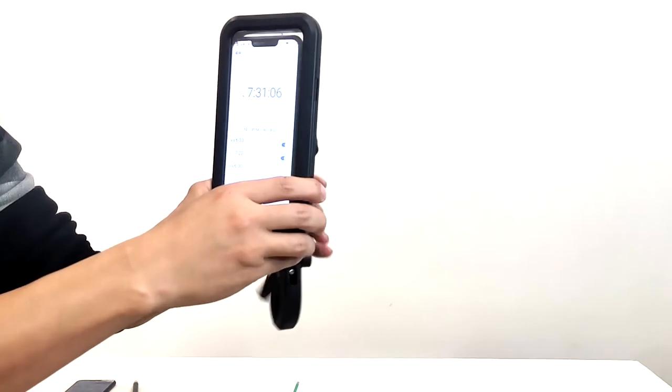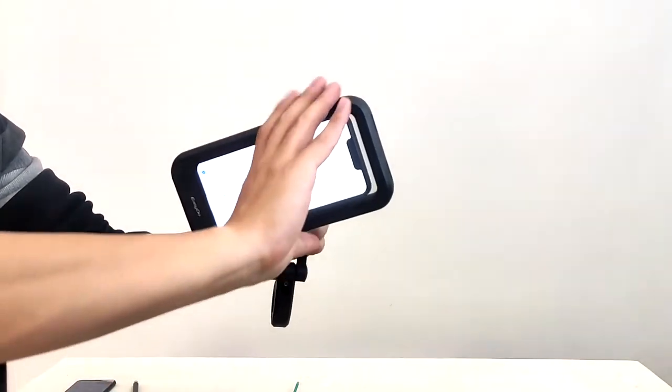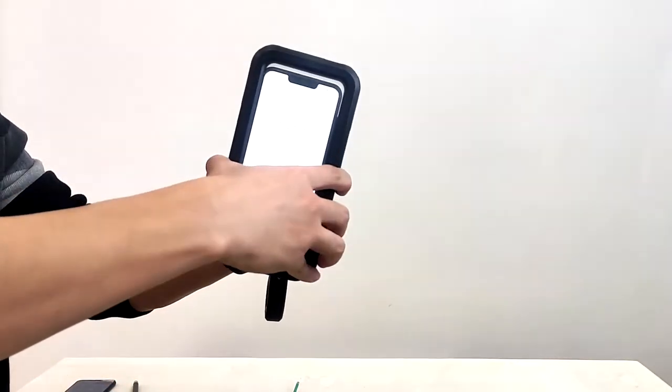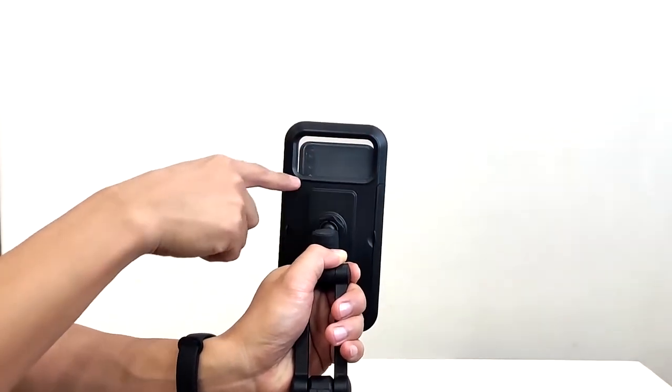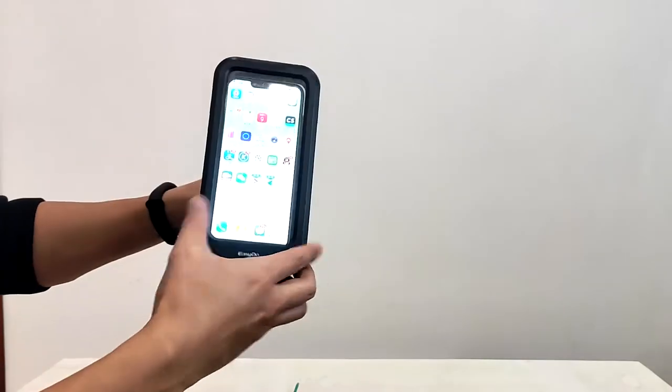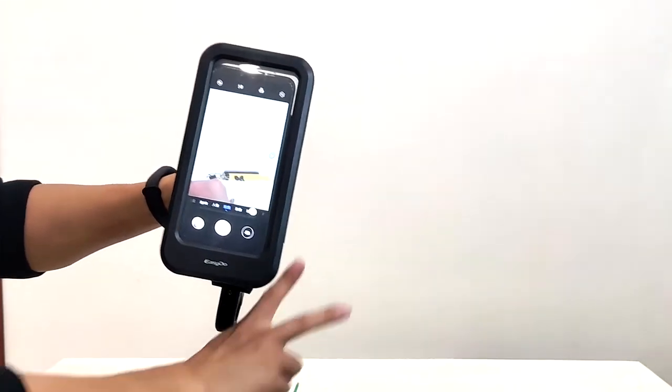Also, it can be rotated 360 degrees. There are transparent areas on the front for the camera, so you can take photos when you are riding.